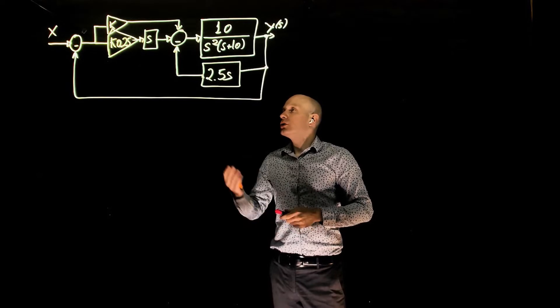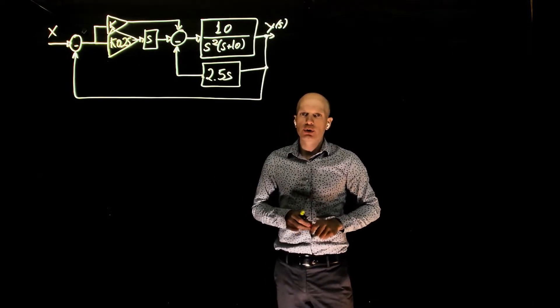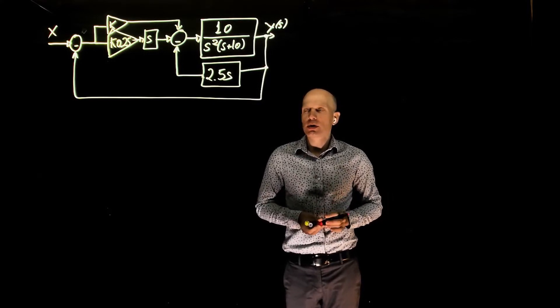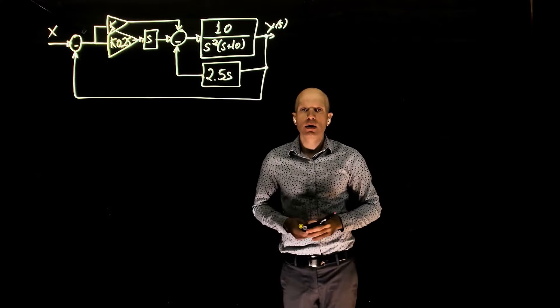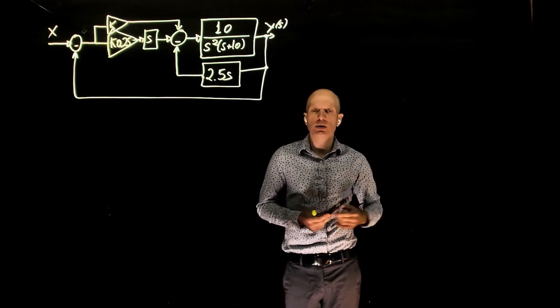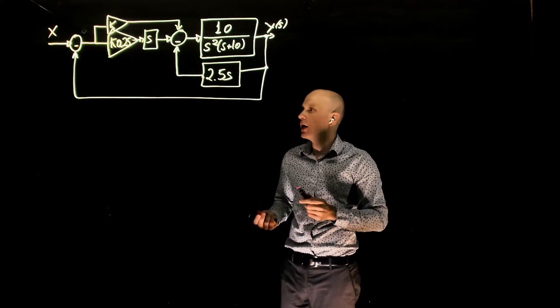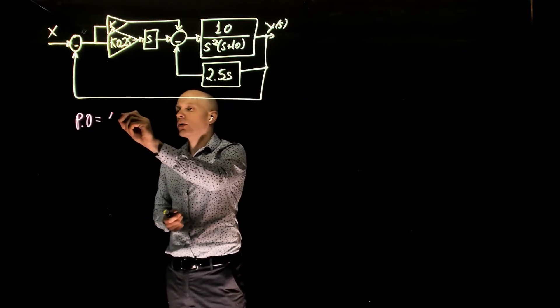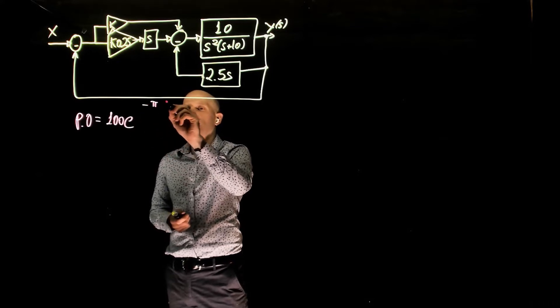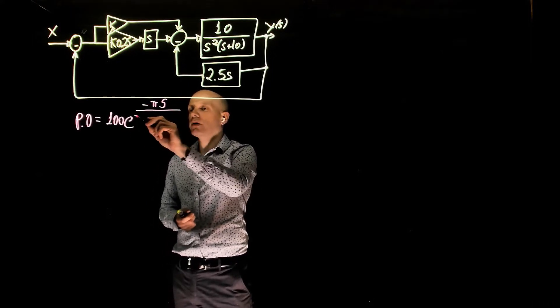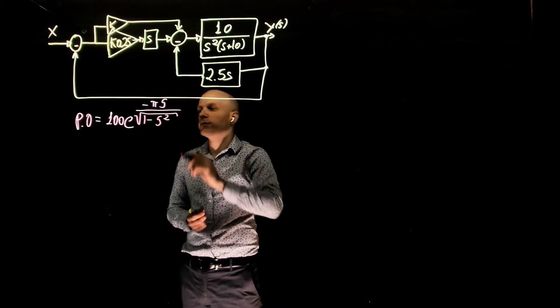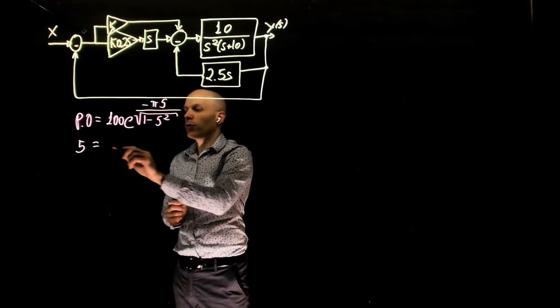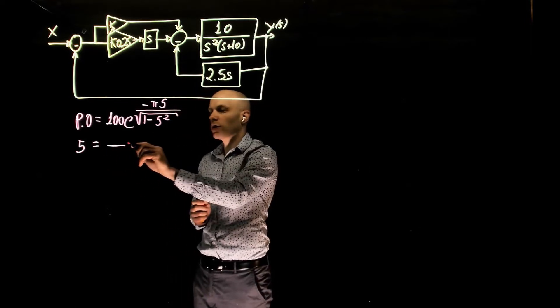We are interested in the value of k that gives a percent overshoot of less than 5%. A percent overshoot of less than 5% is basically another way to say that we want the value of k so that the damping ratio of the system is set to a given value, and that given value can be found through the expression percent overshoot equals 100 exponential of minus pi zeta, the damping ratio, divided by square root of 1 minus zeta squared. The percent overshoot that we want is 5, and now when we equate this expression we can solve the value for zeta.